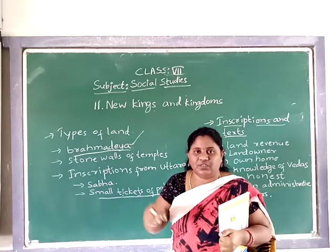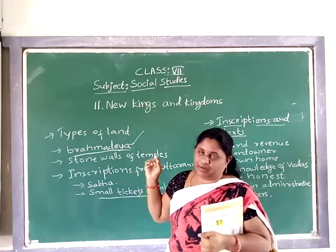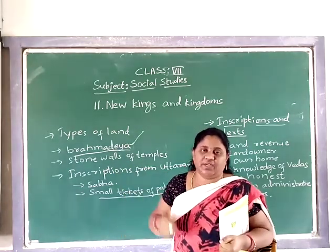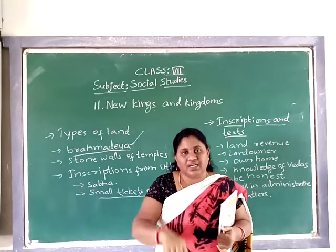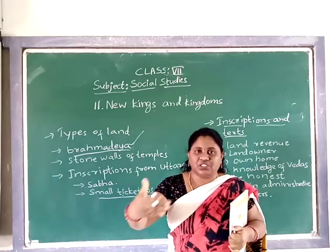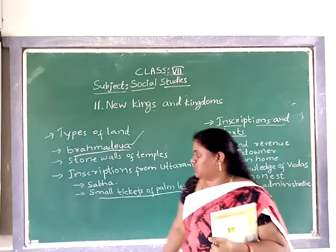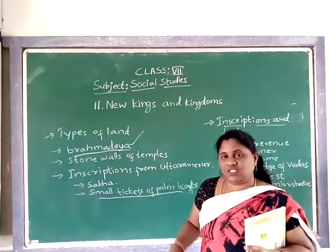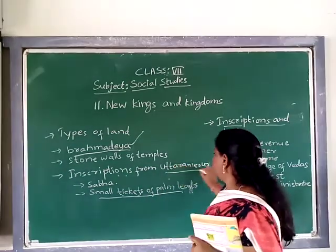They would call a small young boy and bring out one person in front of the pot. The boy would draw one of the palm leaf tickets. Whatever work came on the ticket, that person had to do that work. For example, if a person came before the pot and the boy drew a ticket for administration work, that person had to do that administration work. This is how Sabhas were arranged in Tamil Nadu in older days - and all this information is known to us from inscriptions at Uttaramerur.